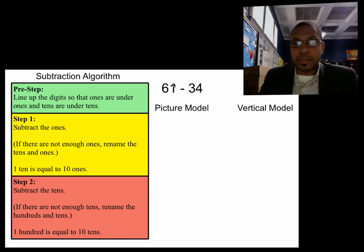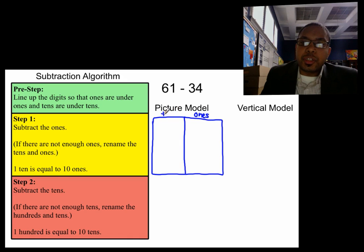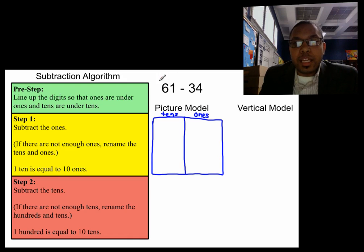We're going to draw a picture model first. Drawing the picture model, we're going to draw a rectangular box and label each place value position. So these are ones, these are tens. In subtraction you only draw the whole. That is it. Only draw the whole. So the whole here is sixty-one.